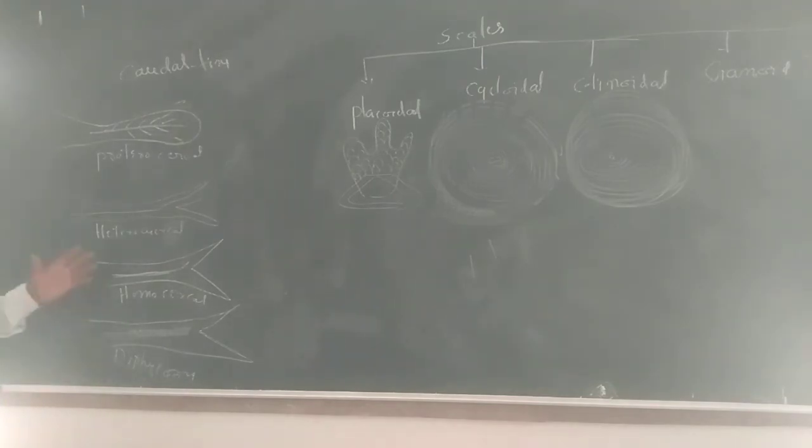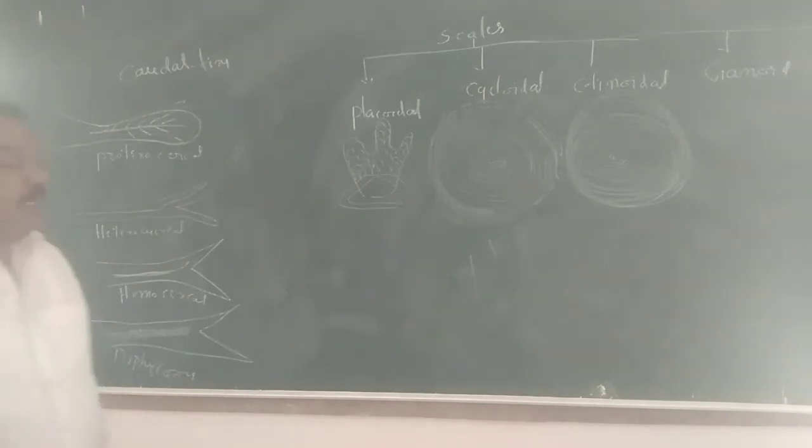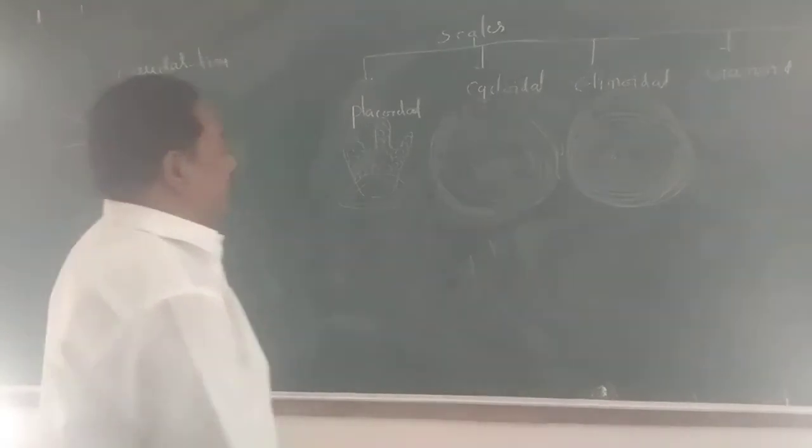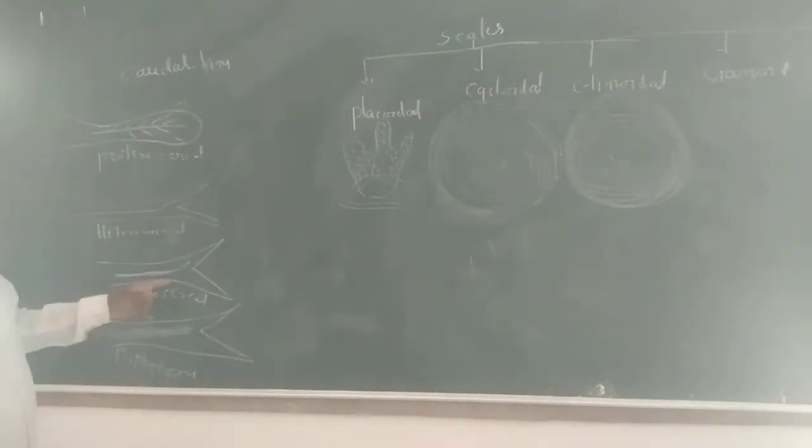Next, homocercal caudal fin. In homocercal caudal fin, the fin has equal lobes. Upper and lower lobes are equal in position, but the vertebral column extends slightly into upper lobe. That is why this is generally externally symmetrical, internally asymmetrical.